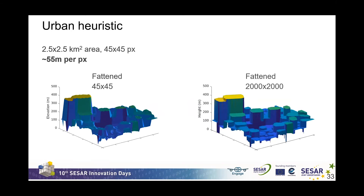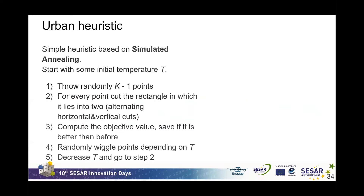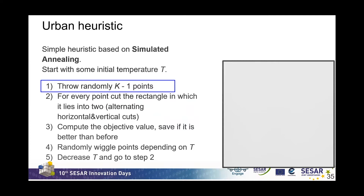Again we observed that the IP is not able to solve more complicated problems — 45 by 45 pixels was essentially the maximum size we could handle. To work with higher resolution terrains we again developed a heuristic. Our heuristic is based on a simulated annealing approach: we start with some initial temperature T and throw randomly k minus one points — where k is the number of rectangles we want to pack the city into — then cut the rectangles using those points, alternating horizontal and vertical cuts.